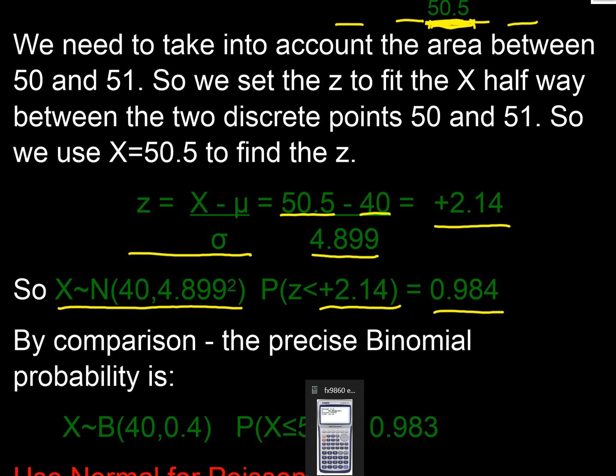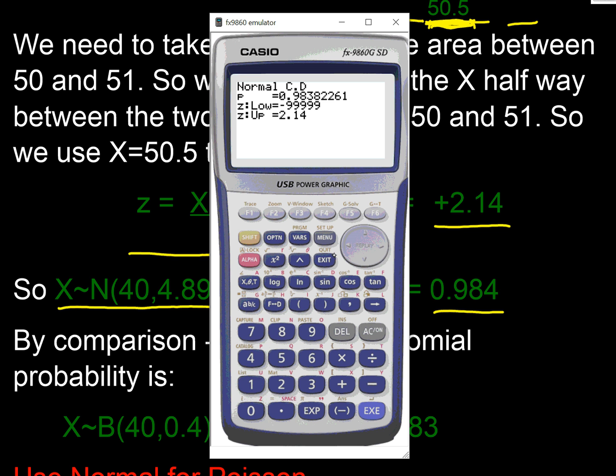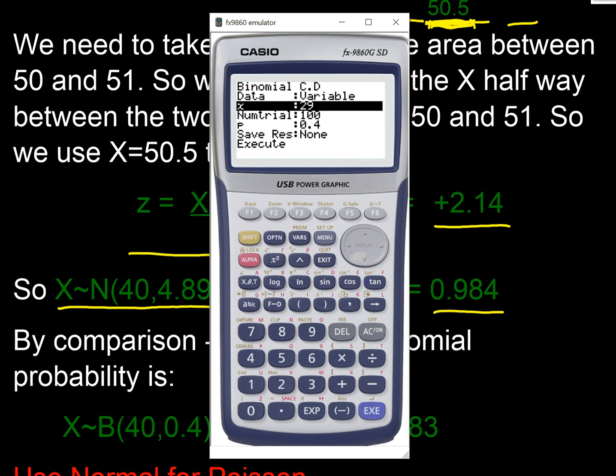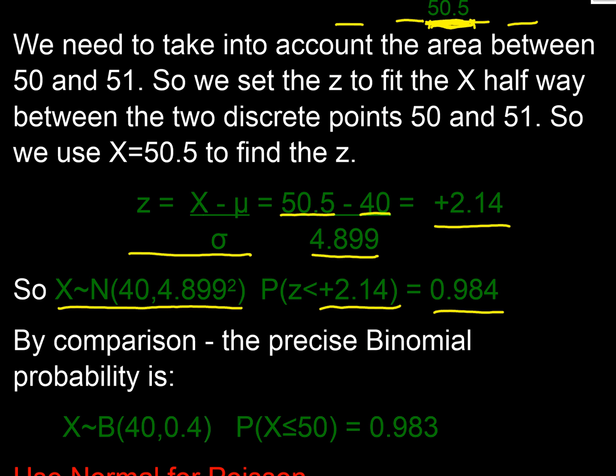Just out of interest, how does that compare to the precise answer on the binomial? Well, in our calculators these days we can just go in again, distribution, binomial, BCD, so here we were interested in 50, that's the number of values. The number of trials was 100 and the probability 0.4, so the precise answer is 0.983. So we were very close.